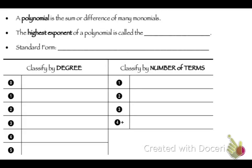Now let's get into polynomials. A polynomial is the sum or difference of many monomials. The highest exponent of a polynomial is called the degree. And in standard form, the degrees or exponents go from greatest to least — very important.